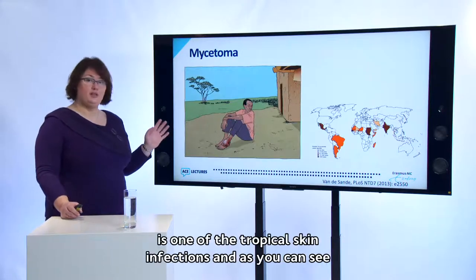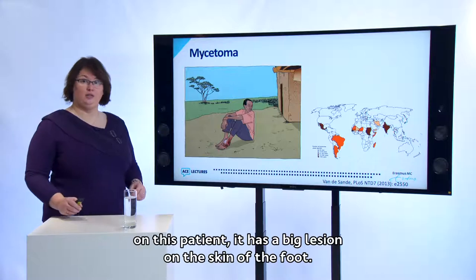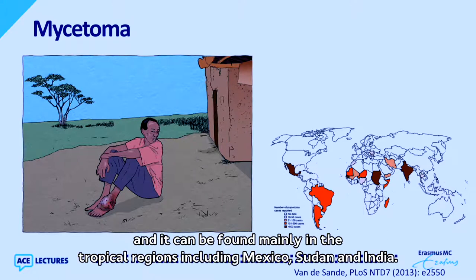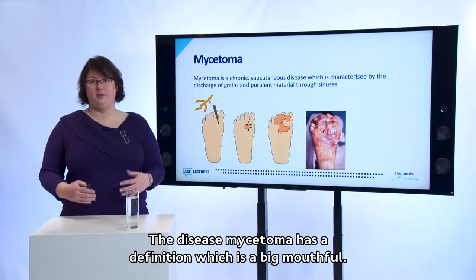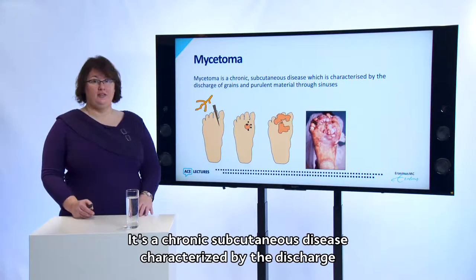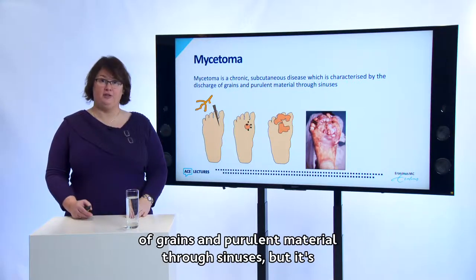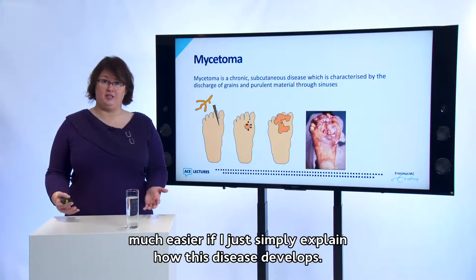Mycetoma is one of the tropical skin infections and as you can see on this patient, it has a big lesion on the skin of the foot. Mycetoma is a neglected tropical infectious disease found mainly in tropical regions including Mexico, Sudan, and India. The disease has a definition which is a big mouthful: it's a chronic subcutaneous disease characterized by the discharge of grains and purulent material through sinuses.